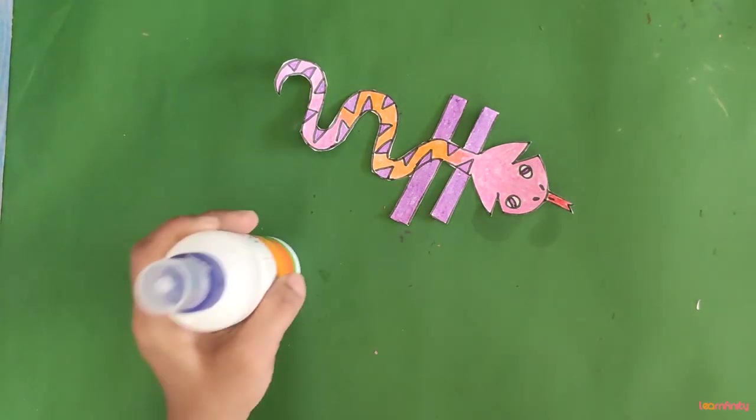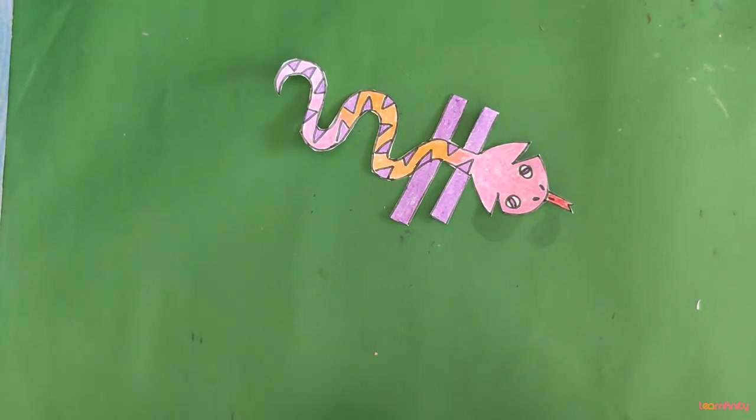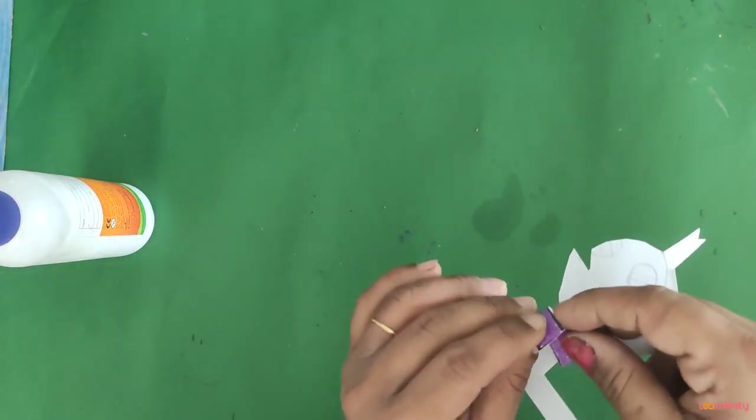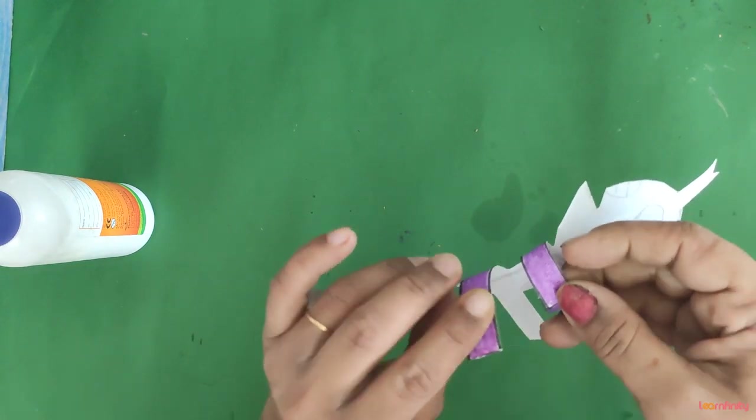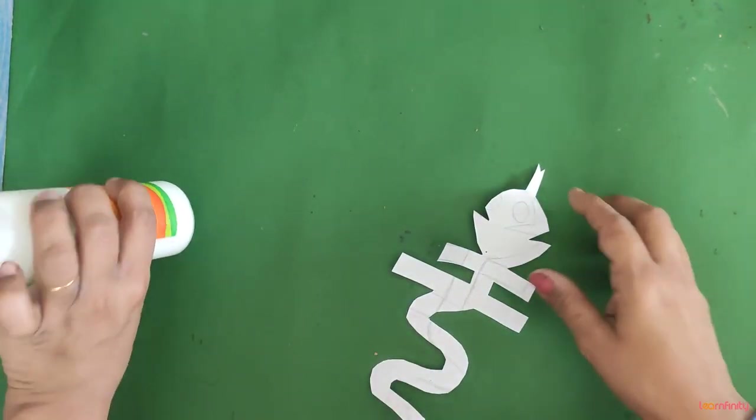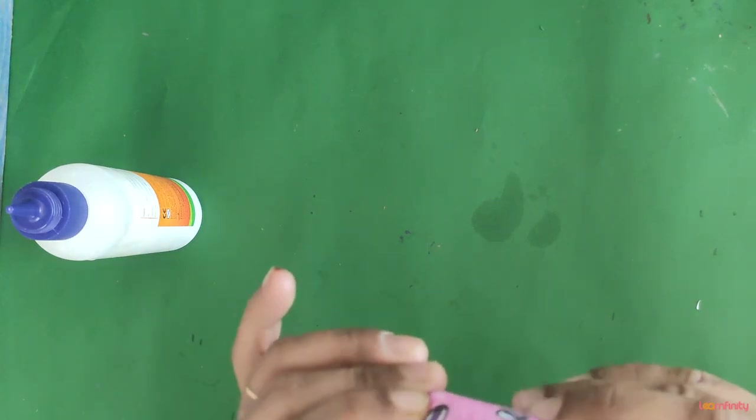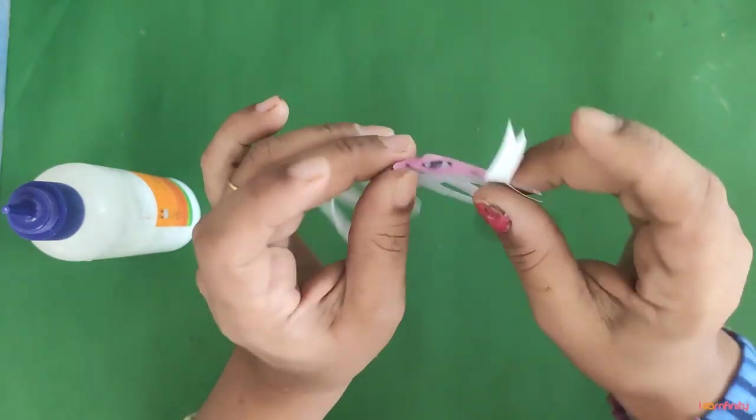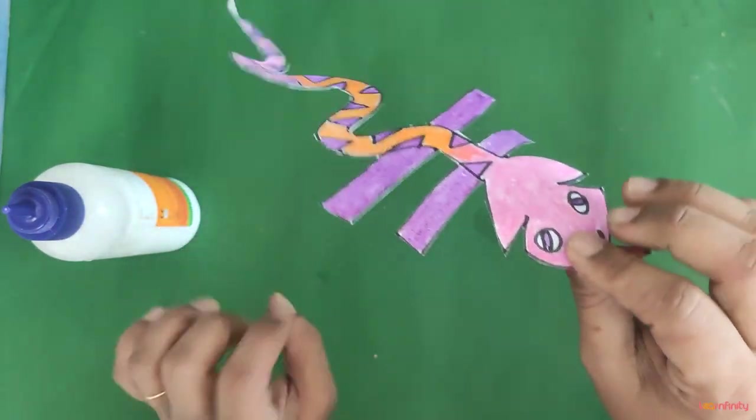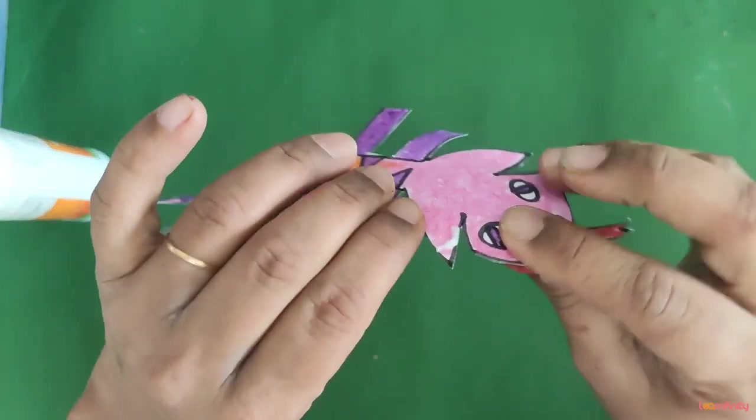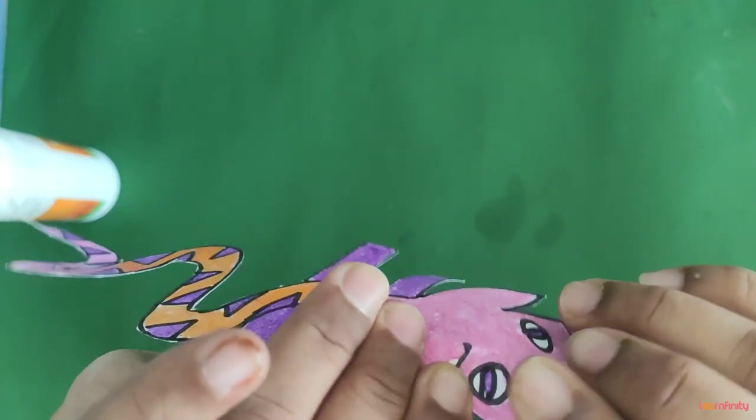Now take your glue and just from this side, just apply glue here and here. And of course to here, this portion. This point and this. Apply glue here and paste it.